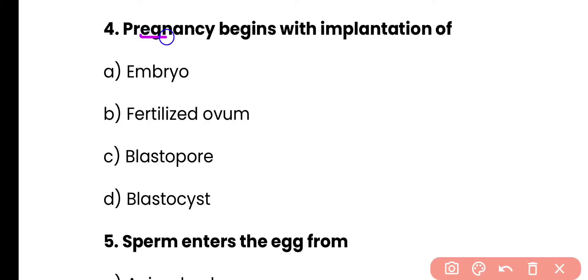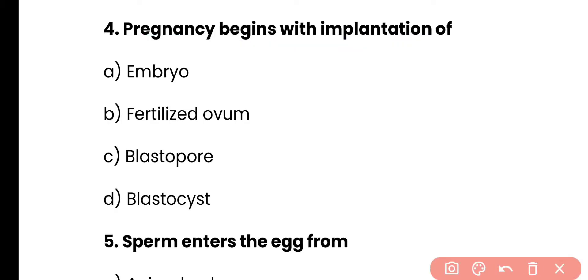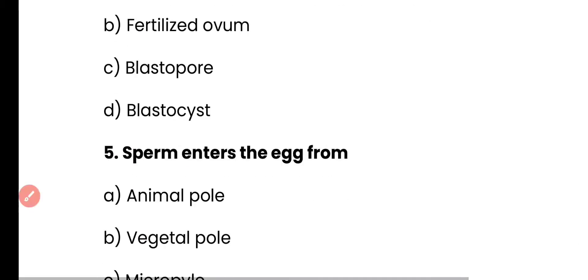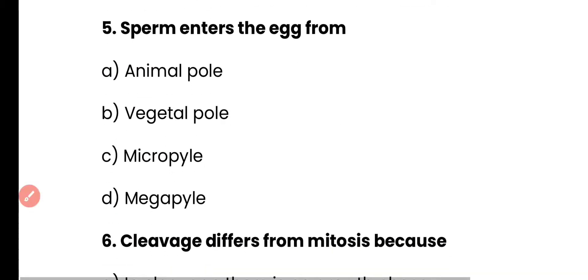Question 4: Pregnancy begins with the implantation of — embryo, fertilized ovum, blastopore, or blastocyst? Correct answer is option D. Pregnancy begins with the implantation of the blastocyst within the endometrium of the uterus.